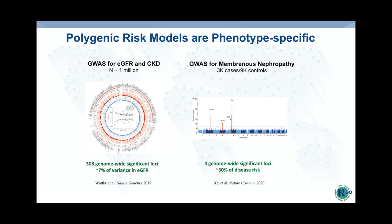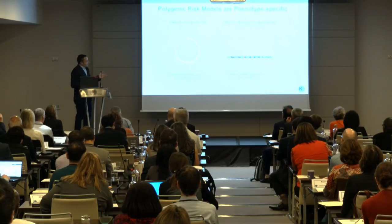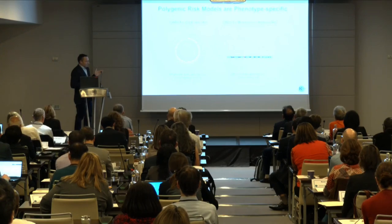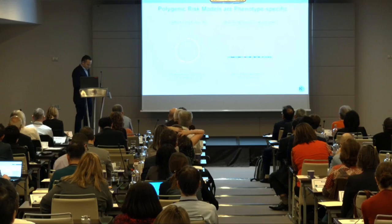So this is one example where genome-wide polygenic risk score models might be helpful, because genome-wide significant loci alone may not capture enough risk. On the other extreme is GWAS for membranous nephropathy performed by my group, where four genome-wide significant loci explain 30 percent of risk — a much larger effect size — with significant interaction between the phospholipase A2 receptor locus and HLA. For membranous nephropathy, the simpler GRS approach is better suited.